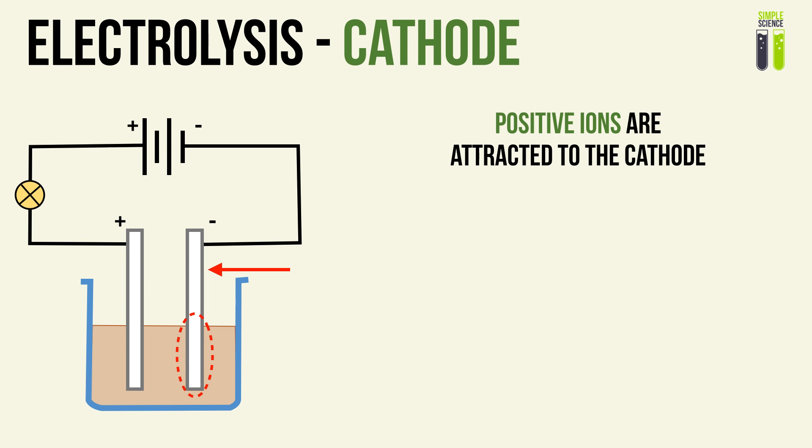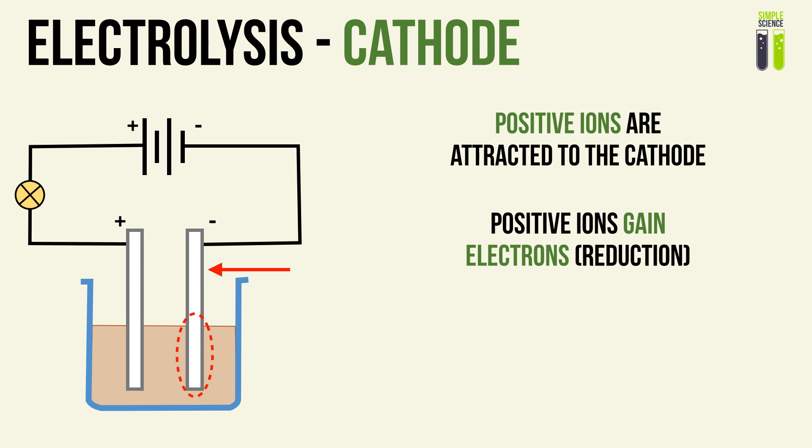Looking at the cathode: the cathode is our source of electrons — it is where the electrons from the power source will first reach. Since it is negatively charged, attached to the negative terminal, positive ions in your solution or liquid will be attracted to the cathode. The positive ions will discharge; they will gain electrons and therefore be reduced.